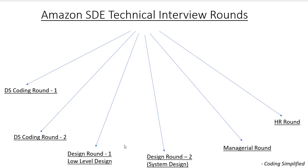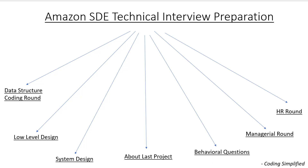Sometimes the order can vary — if you have seven or eight years of experience, system design might come first depending on interviewer availability. But the coding round will definitely be there. For the SDE role, two rounds will definitely be coding rounds. In the coding round, you must focus on every edge case — for example, when reversing a linked list, consider no nodes, one node, two nodes, or many nodes. Your code should be production-ready.